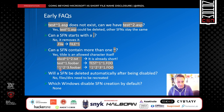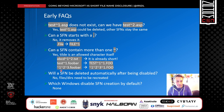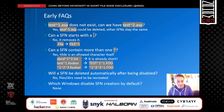Will a short filename be deleted automatically after short name creation is disabled in Windows? The short answer is no — it keeps previously created short filenames. If you want to remove them completely, the files should be moved to a directory that does not create short filenames and then moved back, meaning they need to be deleted and recreated. Which Windows versions disable short filename creation by default? None — all Windows versions support them by default, though Microsoft recommends disabling it yourself.